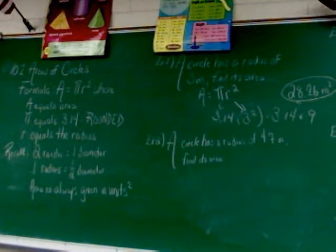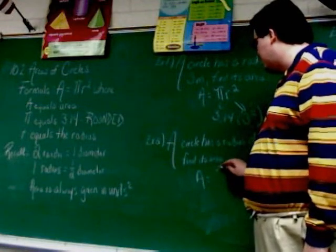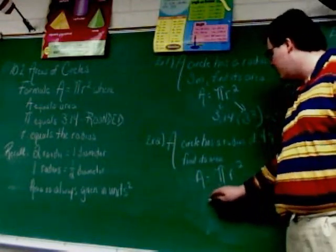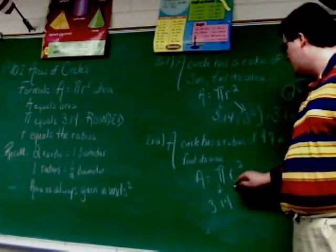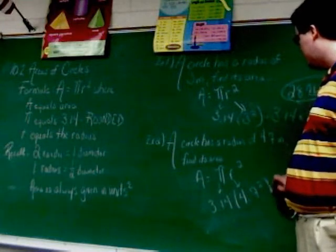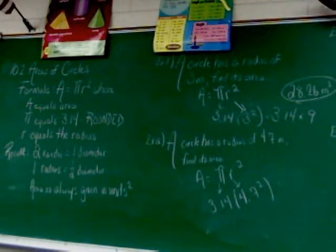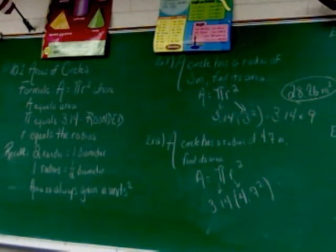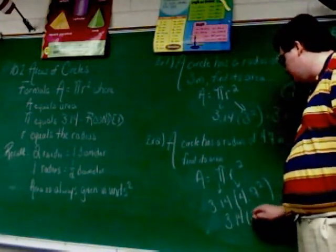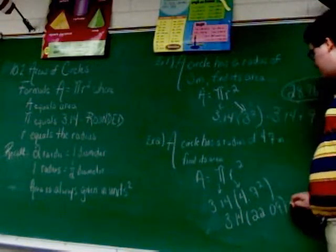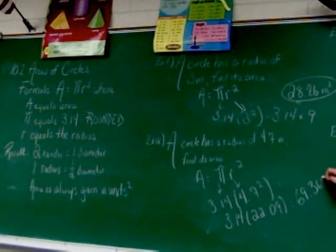So again, we're using the same formula here, the exact same formula. The only difference here is now r is something that's not perfect, it's a decimal. So we're going to multiply together 3.14 and 4.7 squared. So you're going to do 4.7 squared. 4.7 squared is 22.09. So we're looking at 3.14 times 22.09, and when I multiply those two together, I get 69.3626. And that would be inches squared.